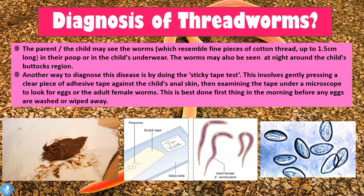Now let's talk about the diagnosis of threadworms. The disease can be diagnosed easily if the parent or child sees the worms — they resemble fine pieces of cotton thread up to around 1.5 centimeters long — either in their stool or in the child's underwear. These worms may also be seen at night around the child's buttocks region, as the female worms congregate there to lay their eggs during the night, making nighttime the best time to notice and diagnose this disease. Another way to diagnose it is by doing the sticky tape test, which involves gently pressing a clear piece of adhesive tape against the child's anal skin and examining it under a microscope to look for adult female worms or eggs. This is best done first thing in the morning before any eggs are washed or wiped away.